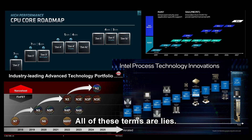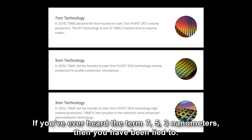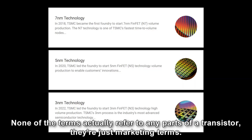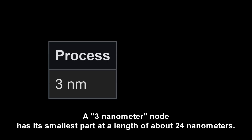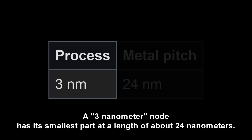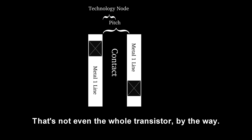All of these terms are lies, and they have been for quite a while. If you've ever heard the term 7, 5, or 3 nanometers, then you have been lied to. None of these terms actually refer to any parts of a transistor — they're just marketing terms. A 3 nanometer node has its smallest part at a length of about 24 nanometers, and that's not even the whole transistor.